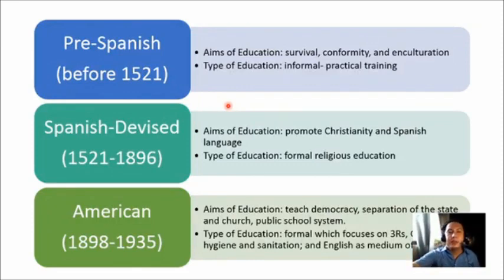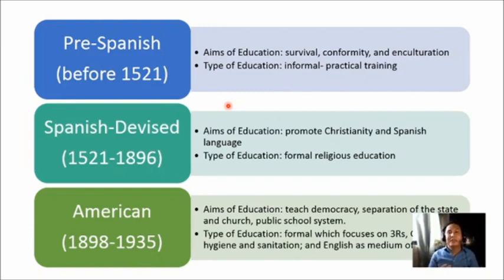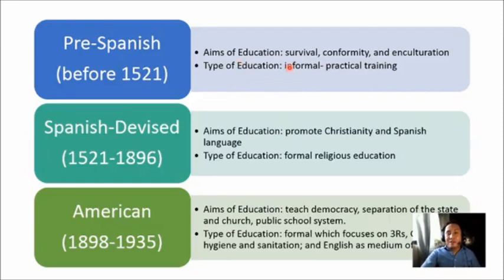Starting with the Pre-Spanish Period, before 1521, the barangay played a major role in how early Filipinos were educated. What the barangay practiced and believed in was passed from generation to generation. The curriculum was unsystematic, unplanned, and spontaneous, because the aims of education during the time were for survival, conformity, and enculturation. The type of education was informal, focused on practical training for conformity and survival.